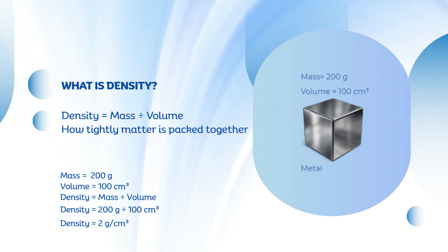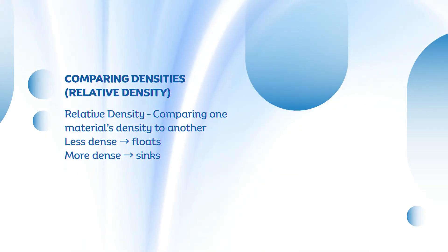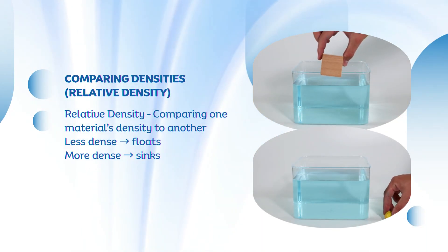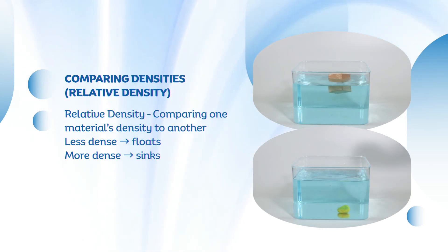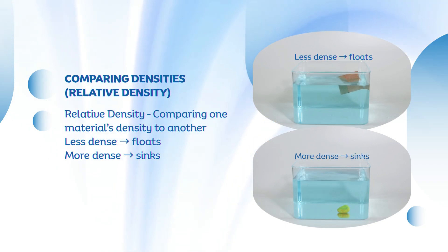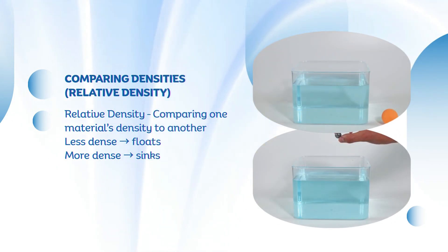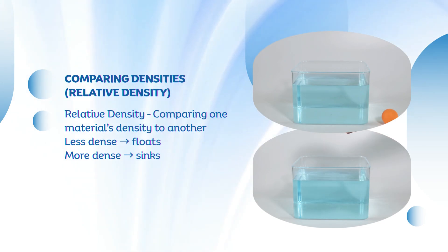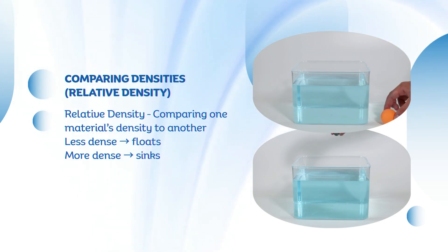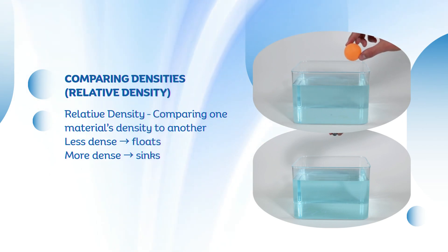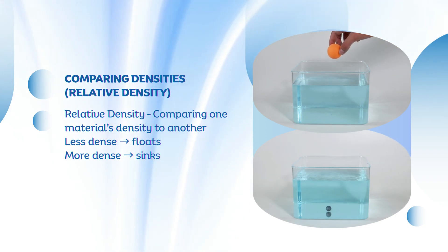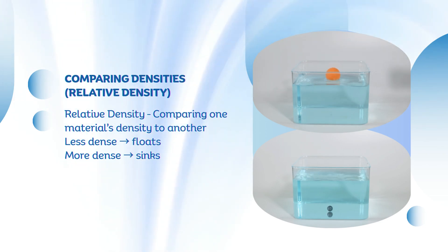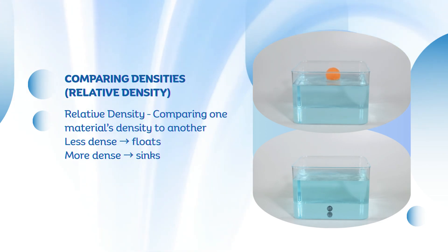Now let's explore how we can compare the densities of different materials — that's called relative density. Relative density compares how dense one substance is to another, usually water. Since water's density is about 1 gram per milliliter, objects that are less dense than water will float, and those that are more dense will sink. Think about a tennis ball and a metal marble: the tennis ball floats because it's hollow and made of low-density material filled with air, while the metal marble sinks because it's made of a much denser material — its particles are packed tightly together. It's not about weight; it's about how much matter is packed into the same amount of space.